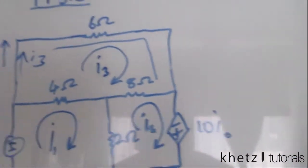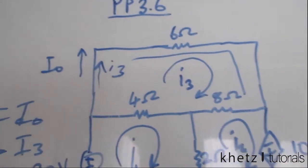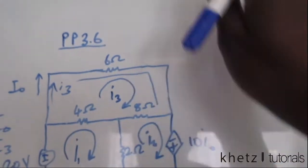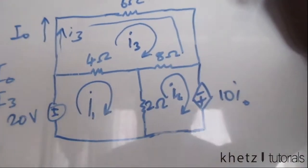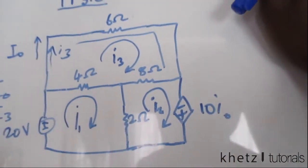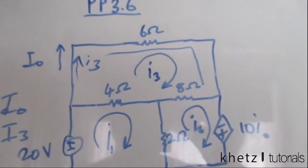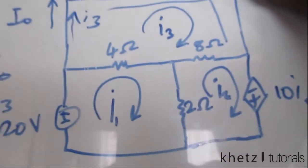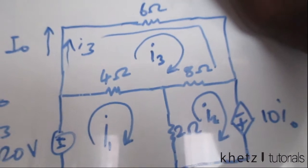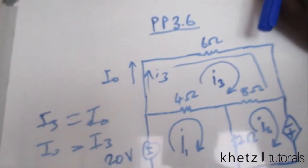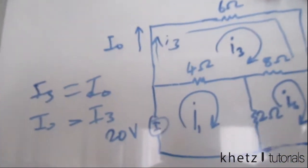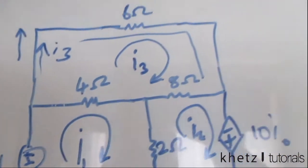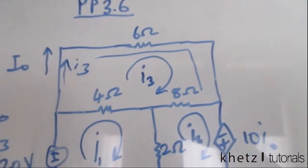This video is sponsored by my parents - that's hilarious. Okay, let's continue to solve the problem. To solve this problem successfully we have three meshes, so we need all the equations for all the meshes, even though we're only interested in finding I.3, because I want to use Cramer's rule to find I.3.